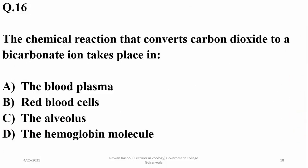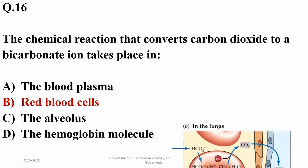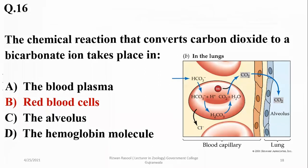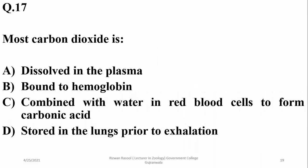Question sixteen: the chemical reaction converting CO2 into bicarbonate ions takes place in red blood cells, where formation and decomposition of carbonic acid also occurs. In the lungs it converts back to CO2. Most CO2 is transported in blood plasma as bicarbonate ions, and for bicarbonate ion formation it combines with water in red blood cells to form carbonic acid first. So Charlie is correct.